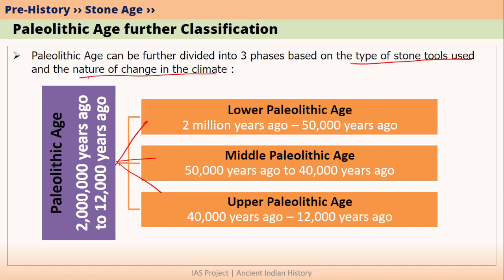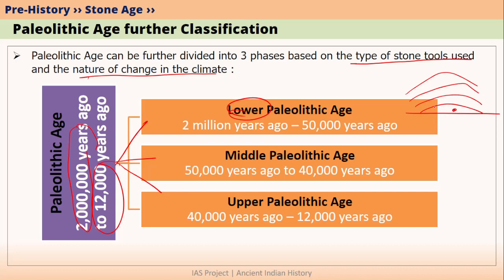Paleolithic Age started somewhere around 2 million years ago and it lasted up to 12,000 years ago. The first part was called the Lower Paleolithic Age — 'lower' because, as discussed in the concept of mound, the lowermost layers are the oldest layers and the uppermost layers are the newest. The Lower Paleolithic Age started around 2 million years ago and lasted up to 50,000 years ago.